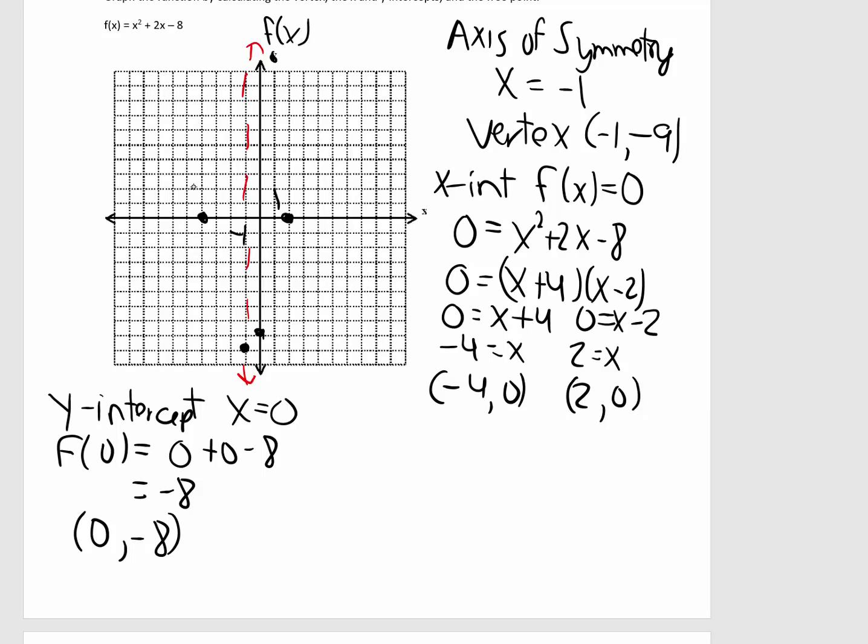Now, notice, the two x-intercepts are symmetrical to each other across the axis of symmetry, and the vertex is symmetrical to itself across the axis of symmetry. But, there's no point that is symmetrical yet to the y-intercept across the axis of symmetry.